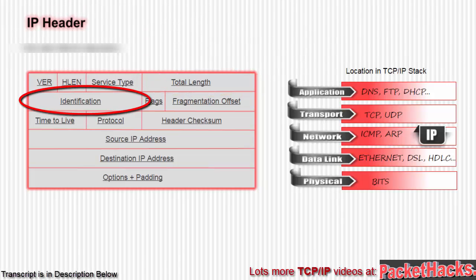The next field is identification, which is 16 bits. If the datagram is fragmented, all the fragments will have the same unique value. This way, the receiving end knows that all fragments with the same identification value need to be reassembled back into one datagram. Fragmentation will be explained in just a bit.